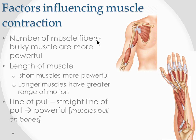Let's look at factors which influence muscle contraction. A large muscle is more powerful than a small muscle - it's like having a thick rope compared to a thin rope. A large muscle has more muscle fibers, which is why it's bulky. A small muscle has fewer muscle fibers and is less powerful. The number of muscle fibers determines power - the more fibers, the bulkier and more powerful. For example, subscapularis has so many muscle fibers compared to the biceps and is therefore more powerful.